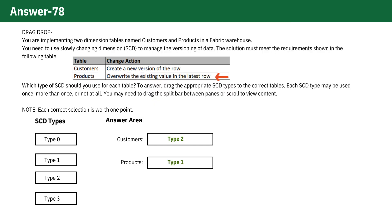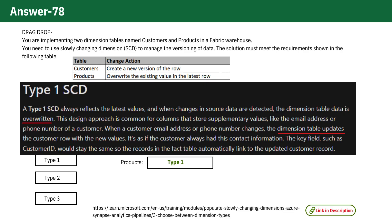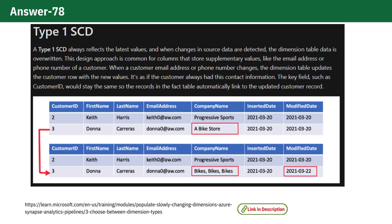For products, the action is to overwrite the existing value in the latest row. This refers to SCD Type 1. In SCD Type 1, changes in the source data are reflected by overwriting the existing data in the dimension table. There is no historical data preservation in this case.